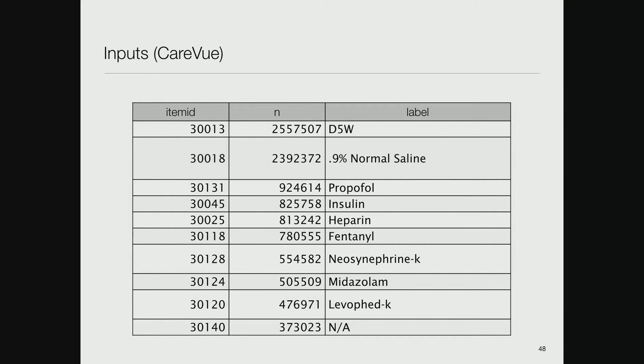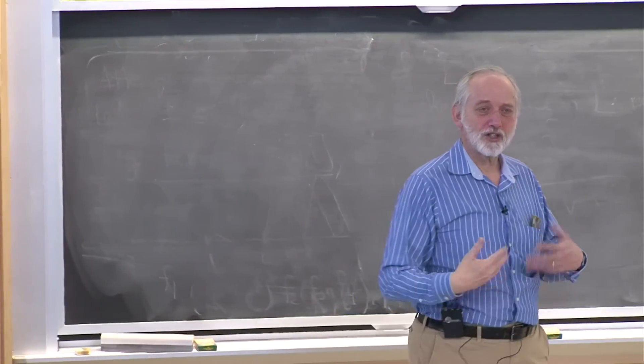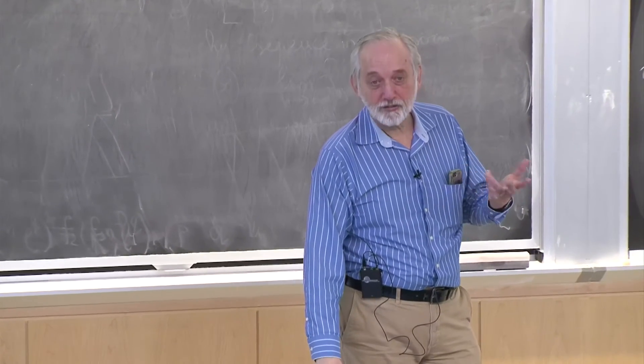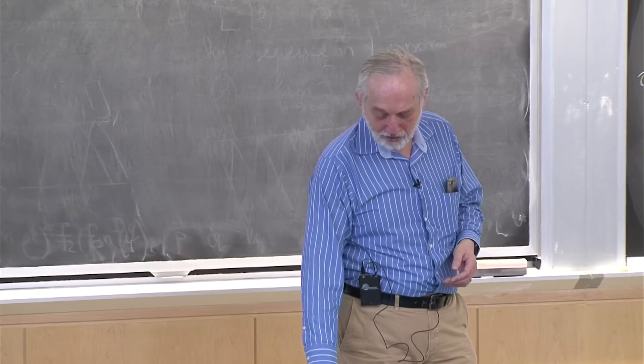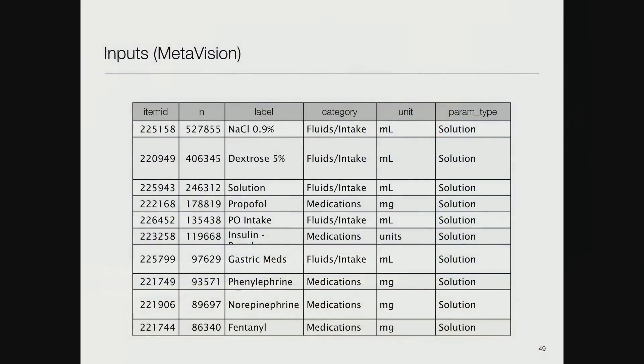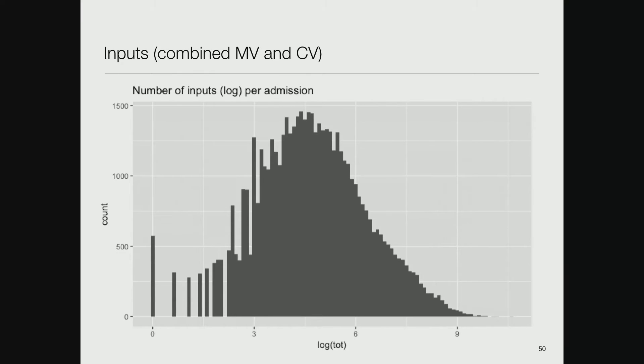Number of output events per admission is on the order of 100 roughly. If you're tracking outputs, you should track inputs. D5W is dextrose in water, 0.9% normal saline. Propofol is anesthetic, insulin, heparin blood thinner. Fentanyl is an opioid. These affect the volume of the person, an attempt to keep them in balance. MetaVision inputs classified differently but similar data. On a log scale there are on the order of 10 to the fifth input events recorded periodically.